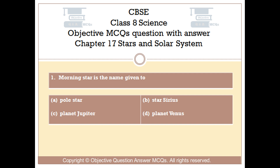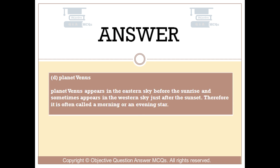The right answer is Option D — Planet Venus. Planet Venus appears in the eastern sky before the sunrise, and sometimes appears in the western sky just after the sunset. Therefore it is often called a morning or an evening star.